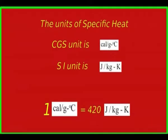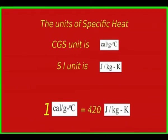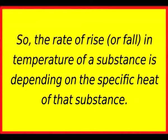The units of specific heat: in the CGS system, it is calorie per gram degree Celsius; and in the SI system, it is joule per kg kelvin. The relation between these units: one calorie per gram degree Celsius equals 420 joule per kg kelvin. So the rate of rise or fall in temperature of a substance depends on the specific heat of that substance.